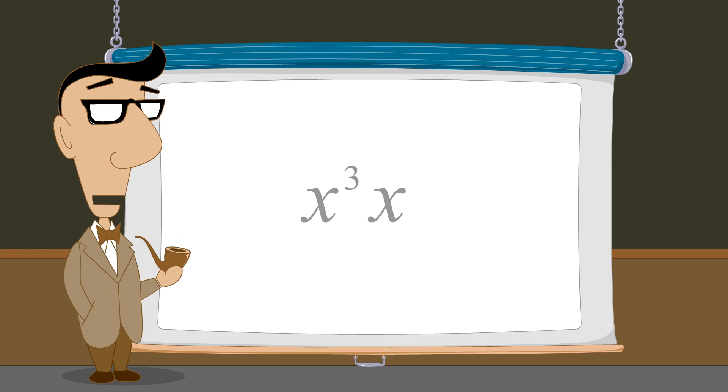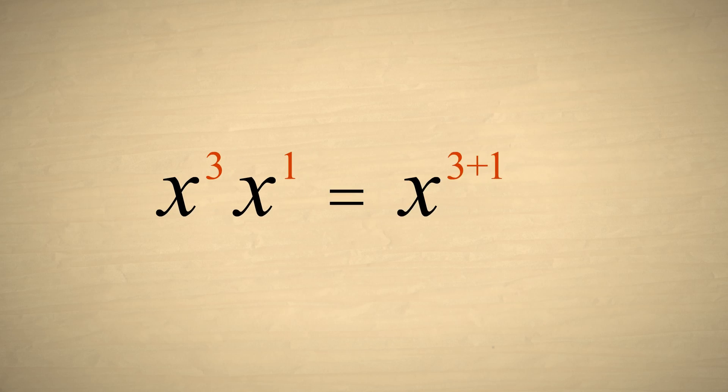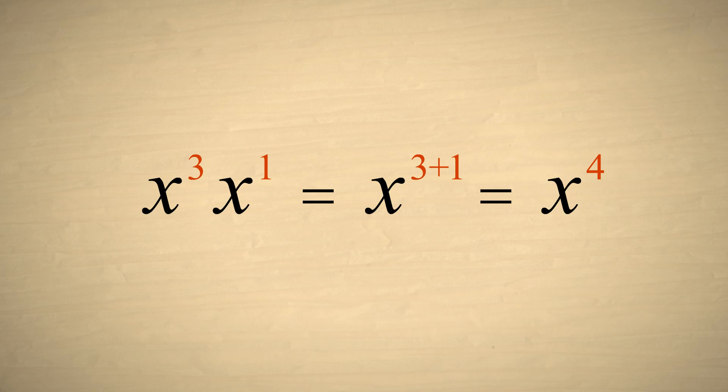For our next example, let's simplify x cubed times x. Since x is the same as x to the first power, let's write it that way so that we can add the exponents. Now adding the exponents gives us x to the fourth power.